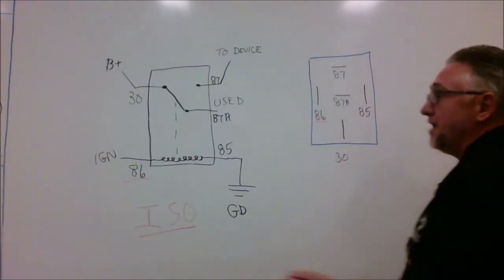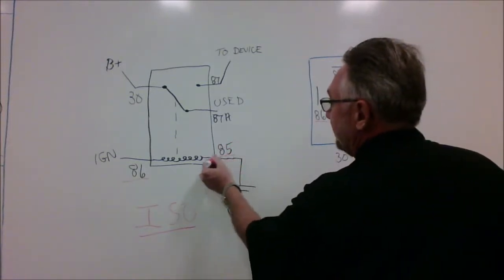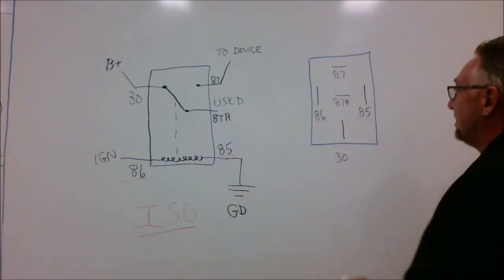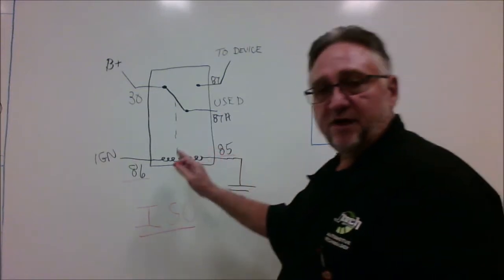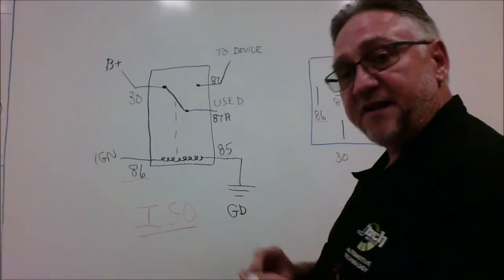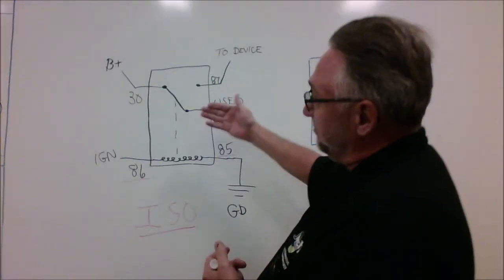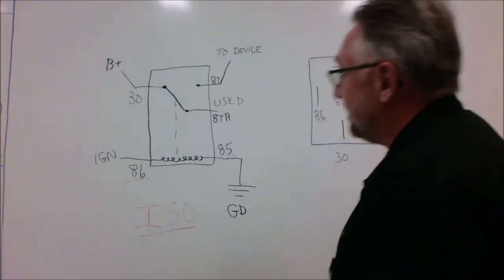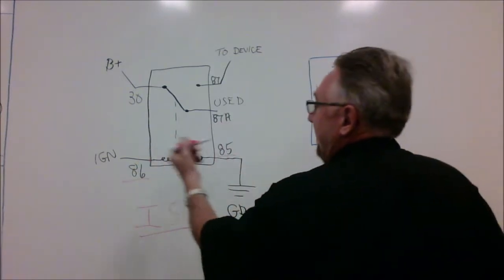We have 85, which is this pin here. These two pins are actually the coil within the relay that pulls the contacts together or pushes them together. As you'll note, we have 85, 86, 87 alpha, 87, and 30 on pretty much any relay in the industry today.